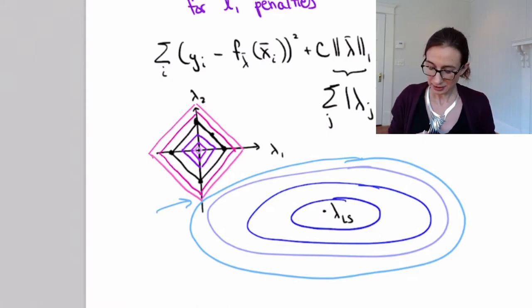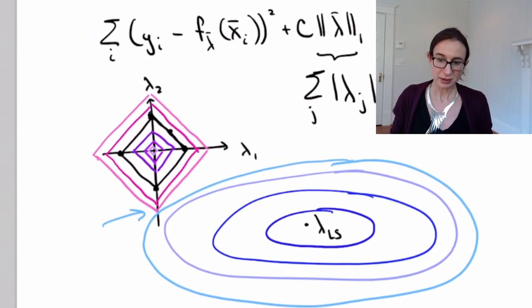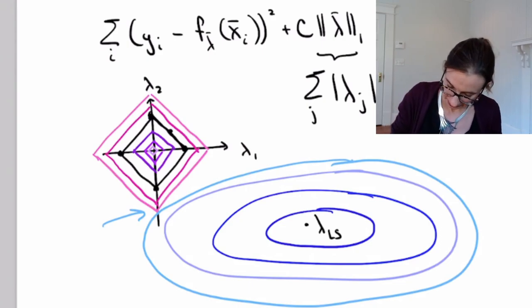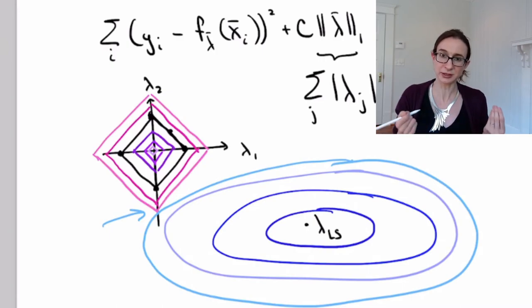And often the minimizer occurs right on the axis, right? Because it's this diamond shape, these corners sort of jut out and things kind of bump into it. That's what happens with corners, right?